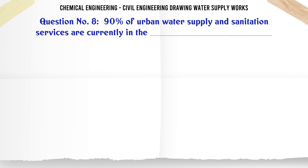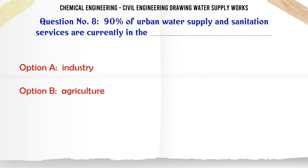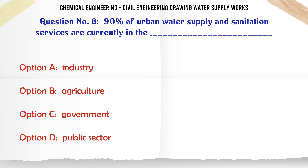90% of urban water supply and sanitation services are currently in the: A. Industry, B. Agriculture, C. Government, D. Public Sector.